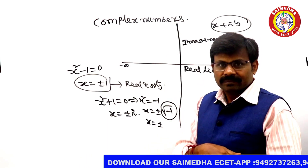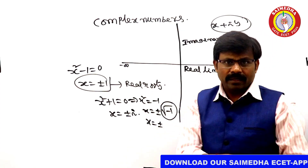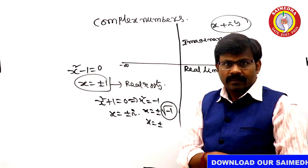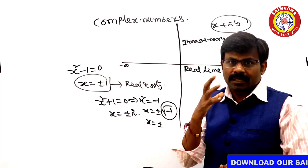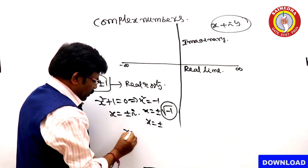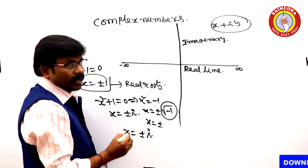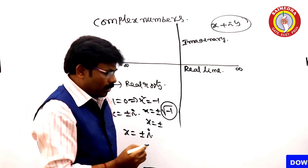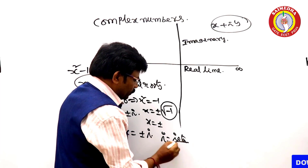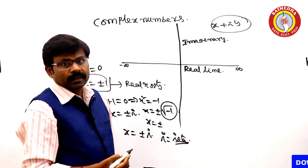That is imaginary. Then real numbers, complex numbers — the extensions of real numbers. A complex number is then a plus yi. x is equal to plus or minus the square root of minus 1, meaning iota (i).